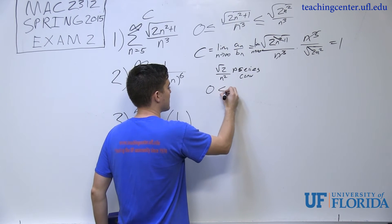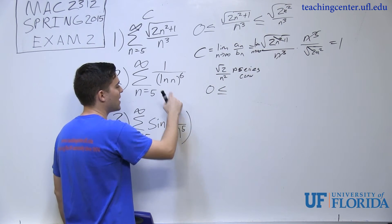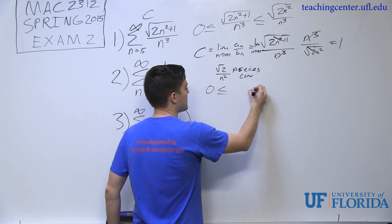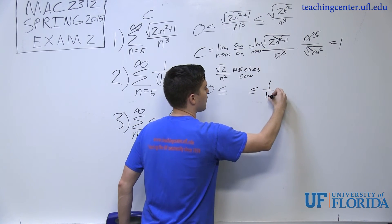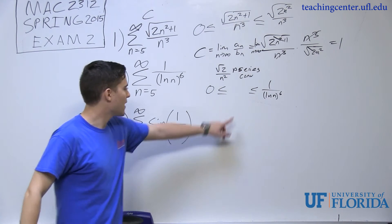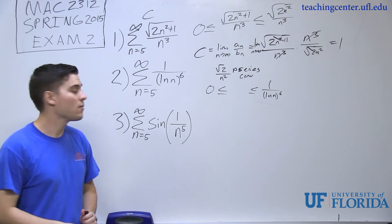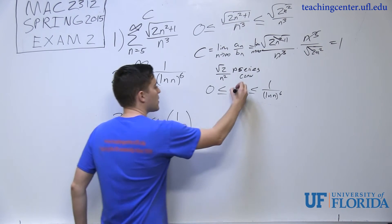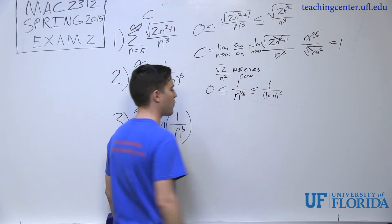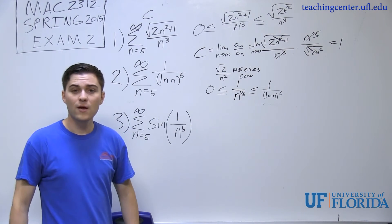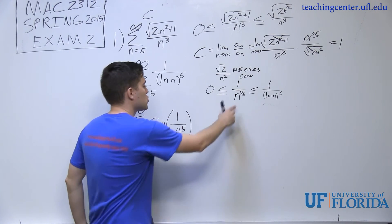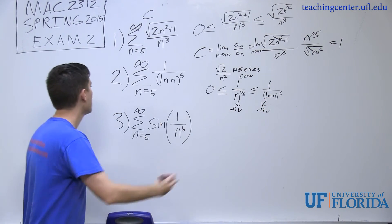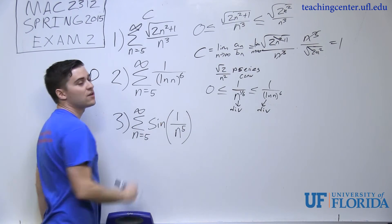For divergence using direct comparison, I need to pick a series that is less than or equal to 1/ln(n)⁶ that diverges. A good rule of thumb: if you have 1/ln(n) to any power, compare it to 1/n^(1/power). That inequality holds, and this comparison series is always divergent by the p-series test. So series two is divergent by direct comparison.